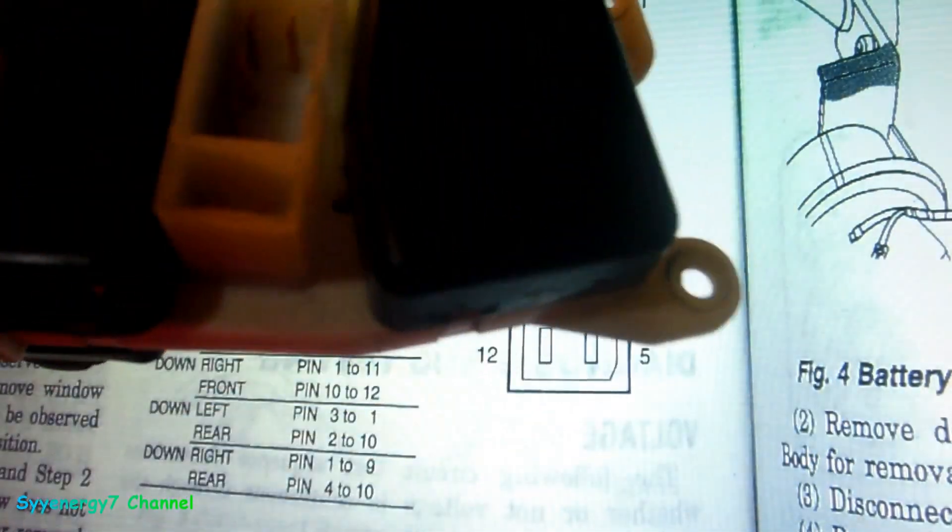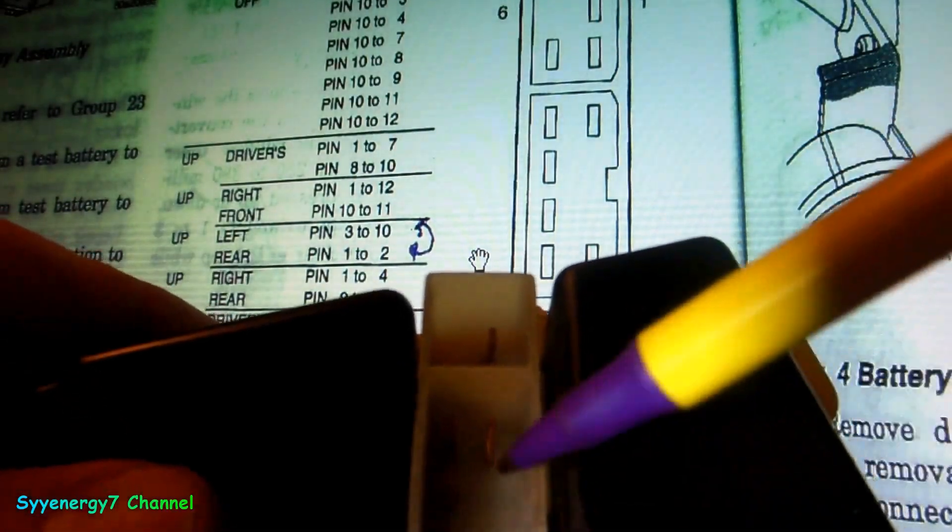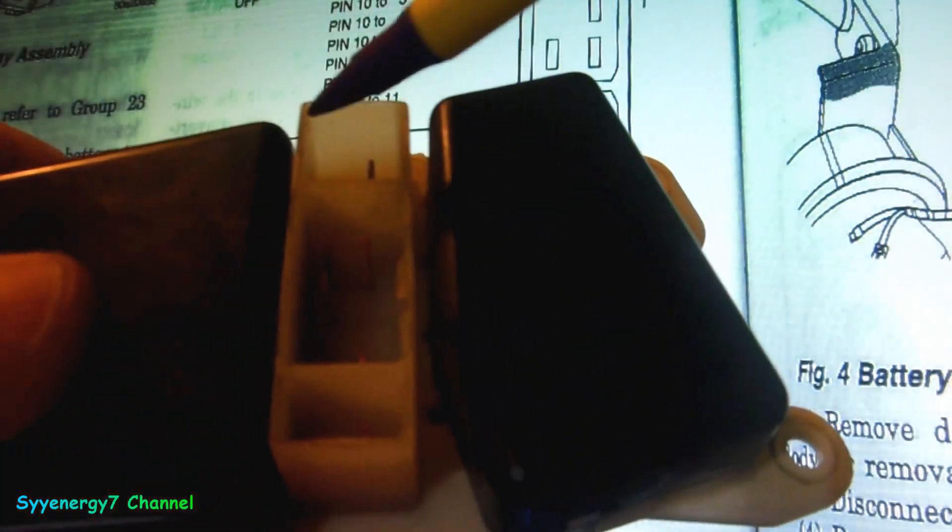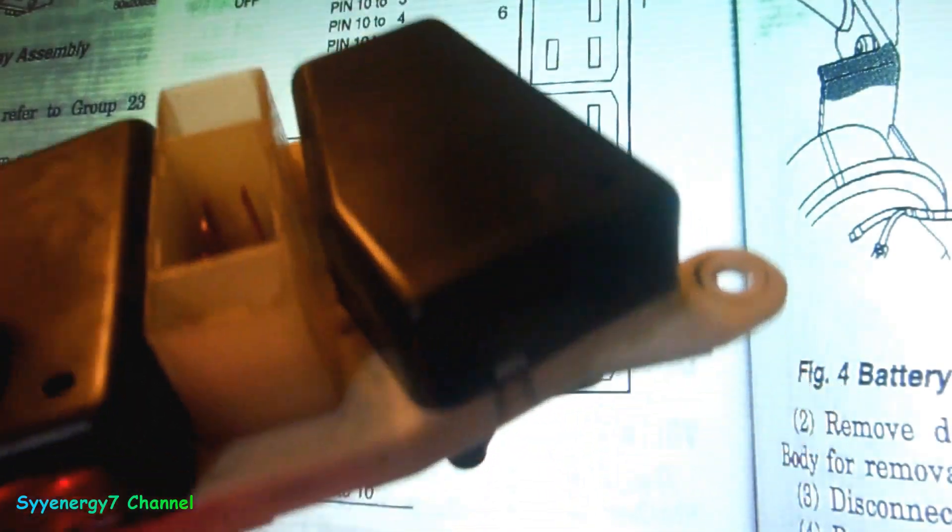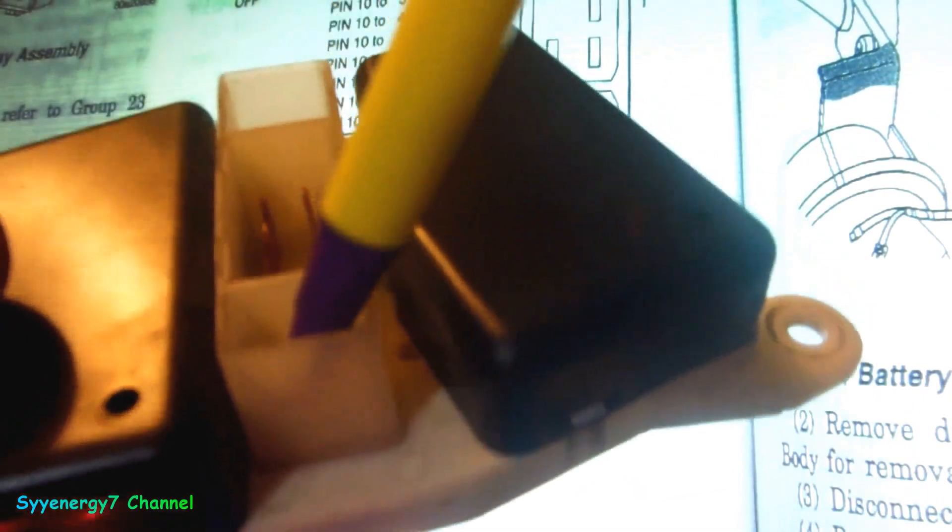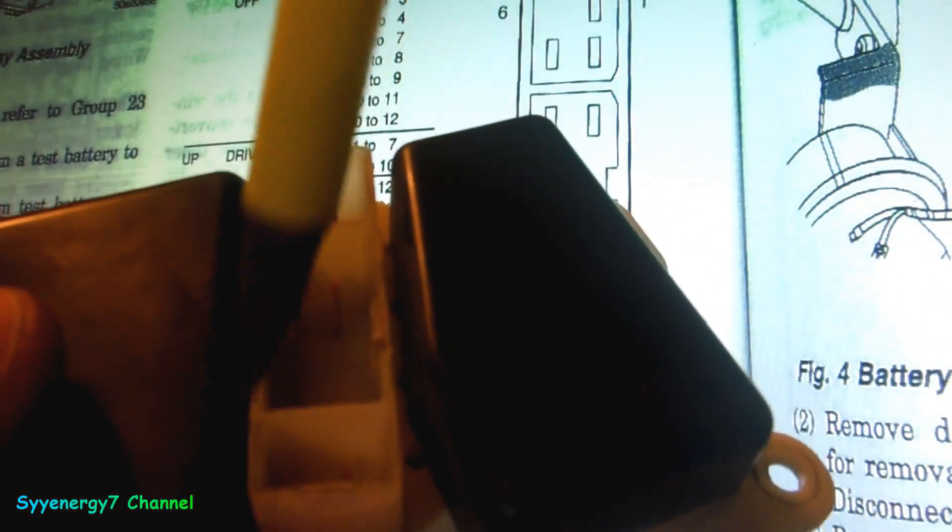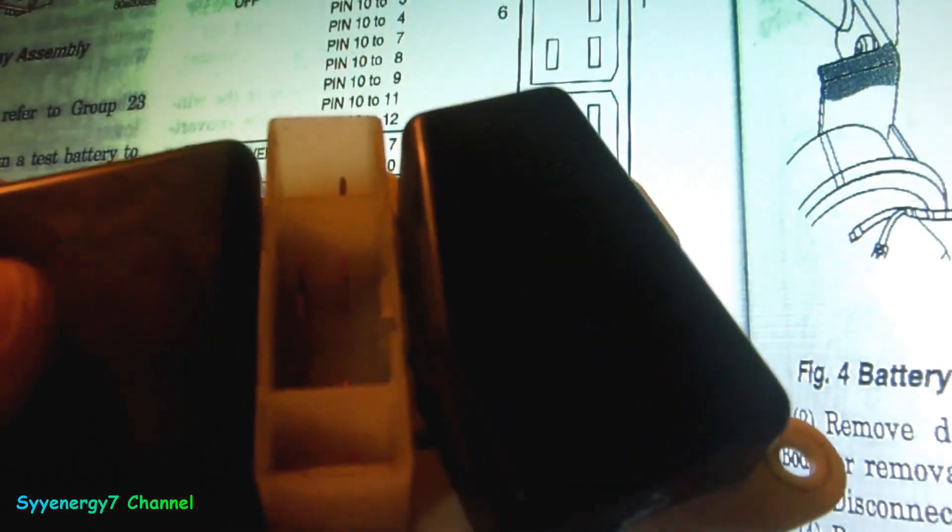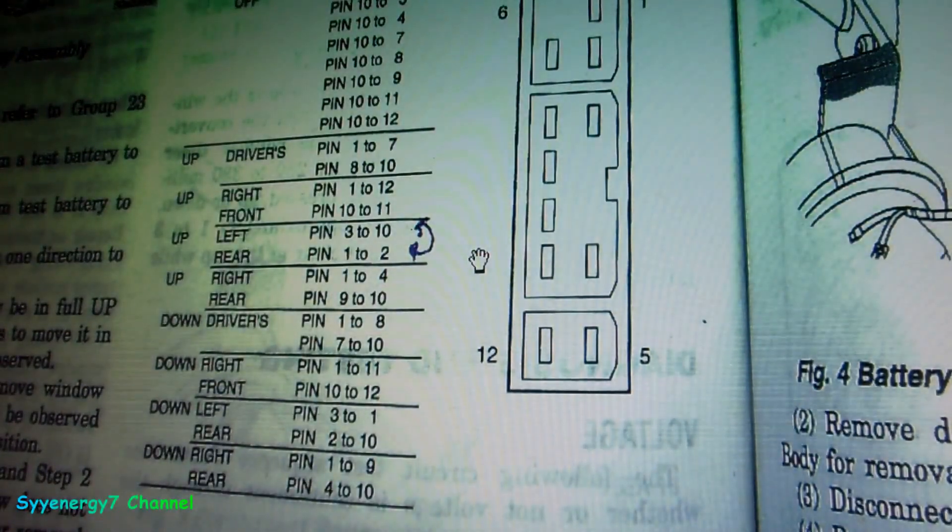When you're looking at the switch here, you'll notice there's not a number 6. There's no 6 - it goes from like 1 through 5 and it skips a block there because you got that clip that goes on there. It goes from 1 to 5 and then 6 to 10, but it's flipped around mirror-wise when you're looking at it on the harness, the wiring harness.